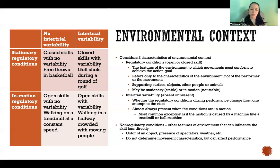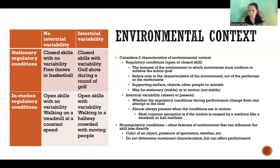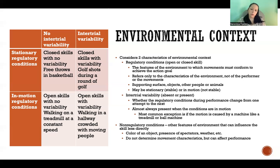Non-regulatory conditions are other features of the environment that can also influence the skill, but less directly than regulatory conditions. Examples include the color of an object — a ball might be more visible in one color than another — the presence of spectators, which may be more distracting, or weather conditions like the sun being in your eyes on a clear day versus a cloudy day. These are features that can influence performance, but in a less direct way.